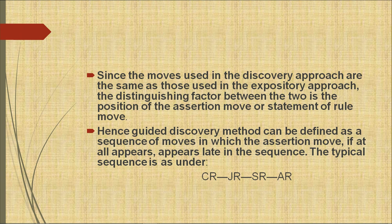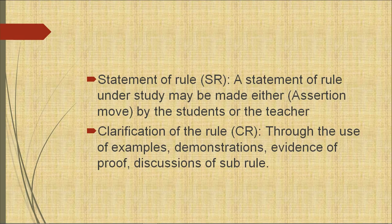The typical sequence of discovery learning is: CR, then JR, then SR, then SR, then AR. SR is the statement of the rule — a statement of the rule under study made by the student or teacher. CR is clarification of the rule through the use of examples, demonstration, evidence or proof, and discussions of sub-rules. JR is justification of the rule — this move identifies the veracity of the fact under study, with cross-proofs, opinions of experts, etc.